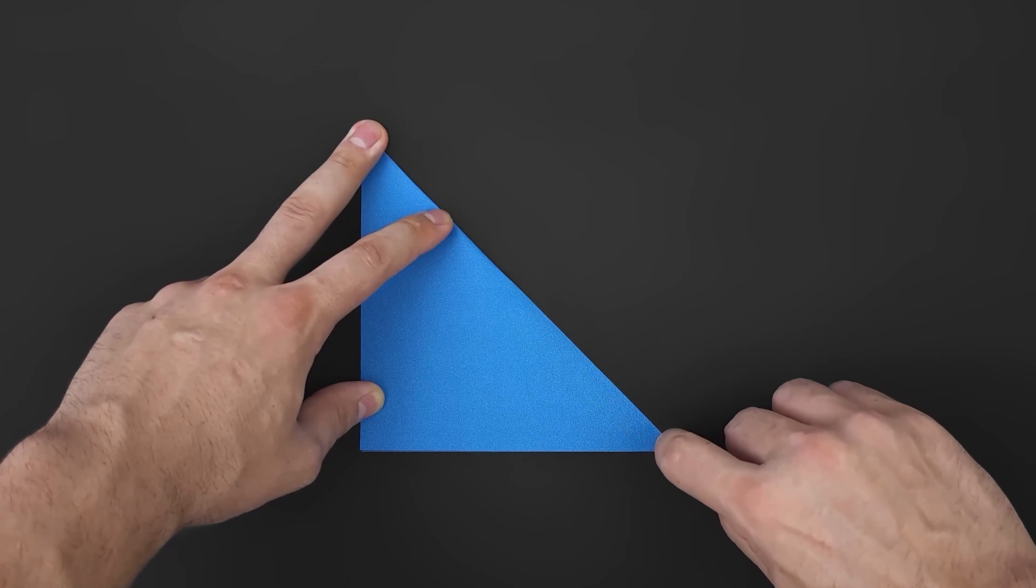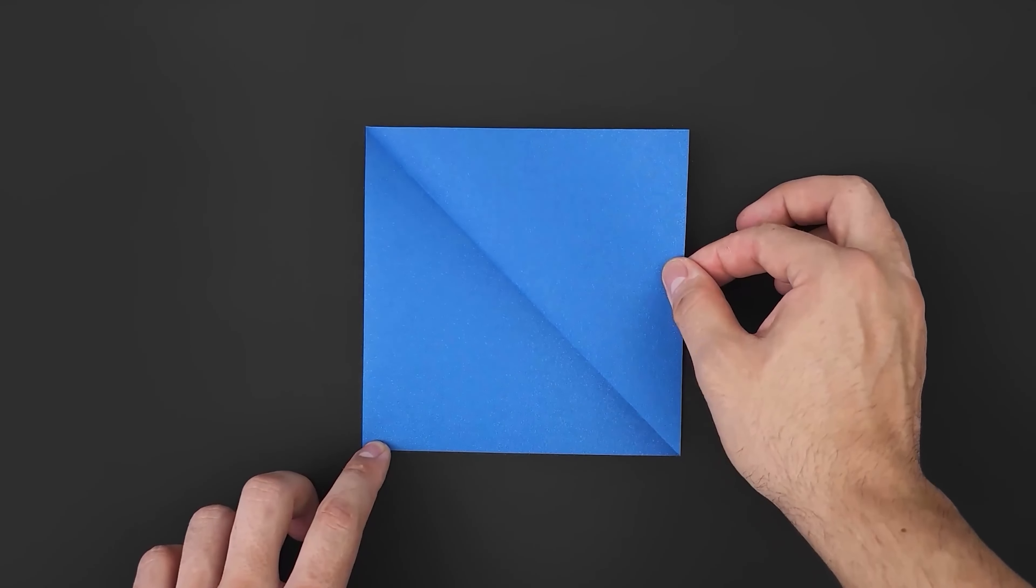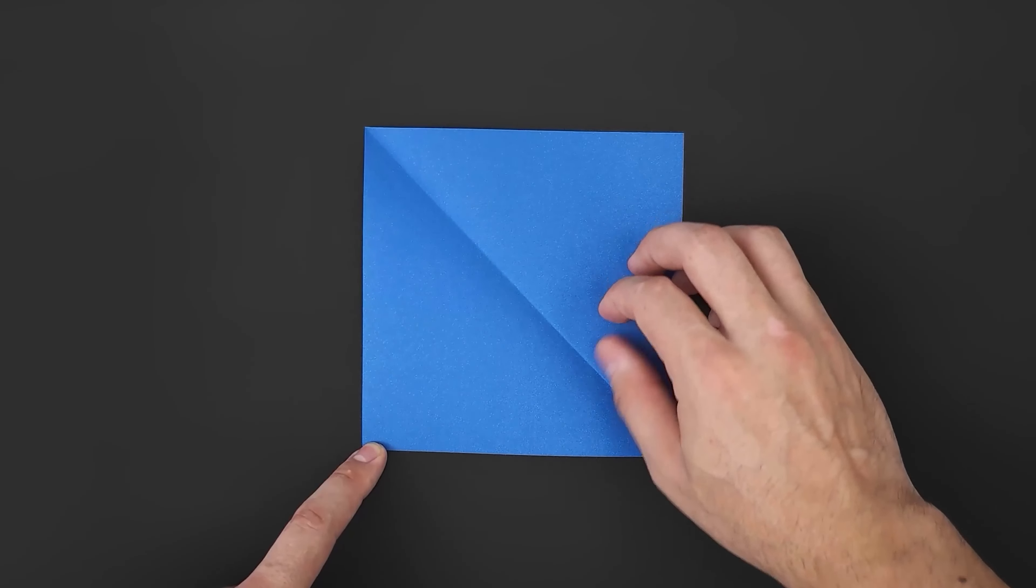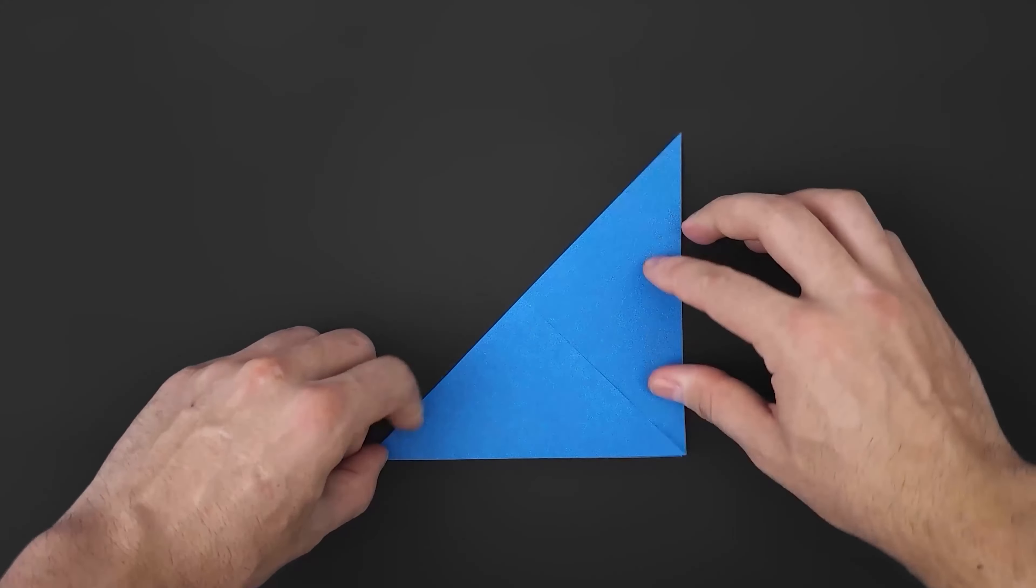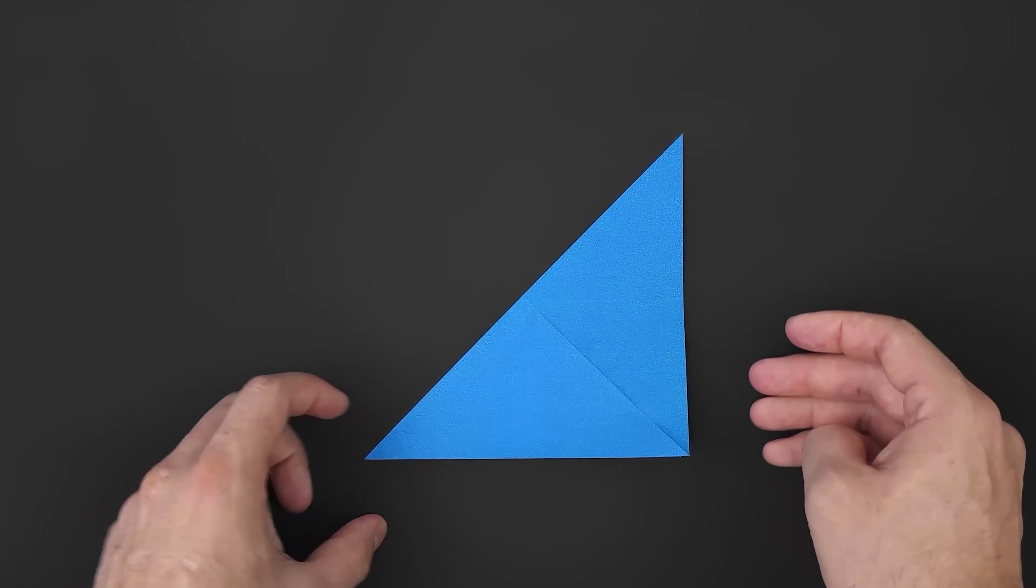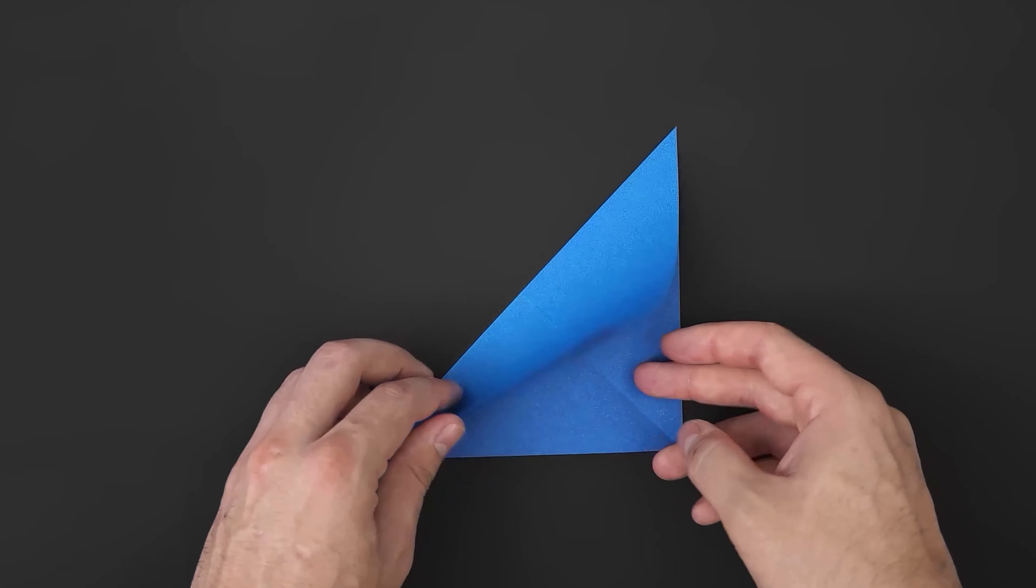As the first step we need to fold the paper in half along both diagonals, creating an X. So let's bring one corner to the other, marking the first diagonal, unfold it, and fold the opposite diagonal.